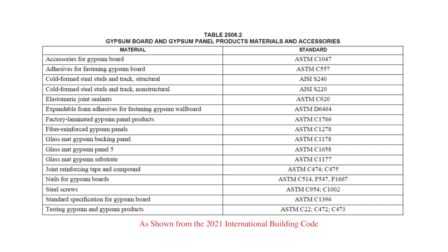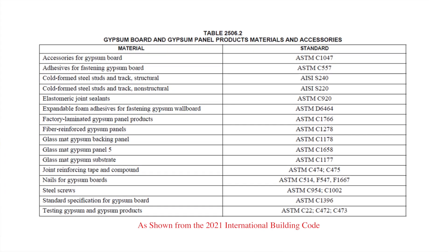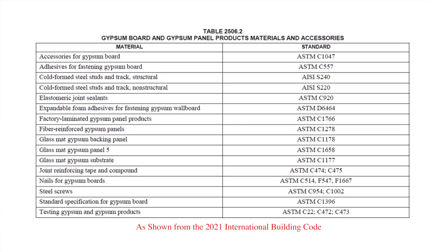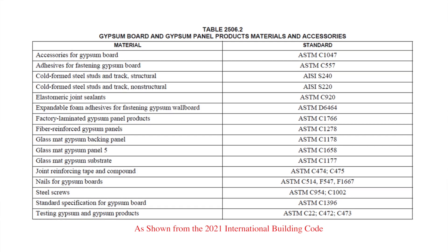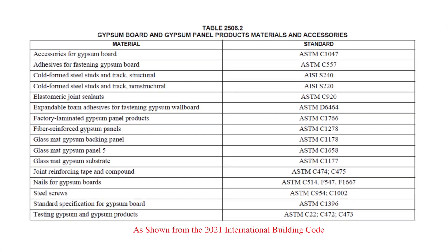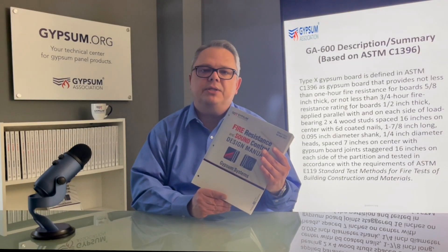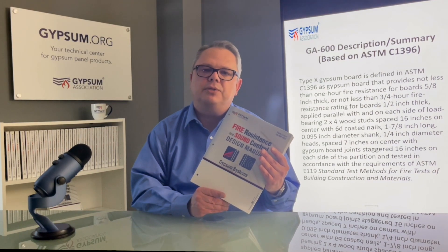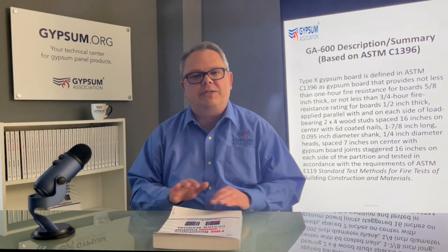Table 2506.2 includes many different standards for various kinds of gypsum panel products. However, most of those standards define Type X in much more detail. For example, the GA-600 Fire Resistance Design Manual notes that Type X gypsum board is defined in ASTM C-1396.